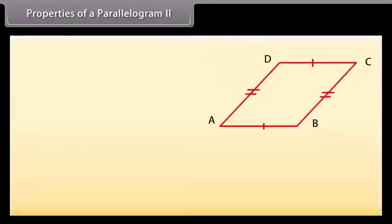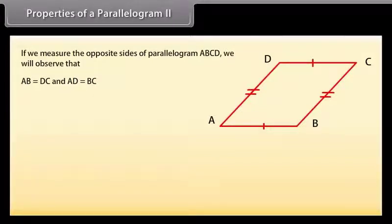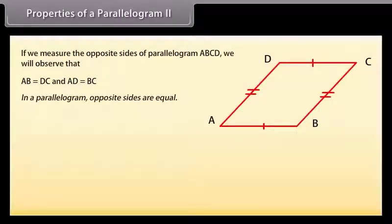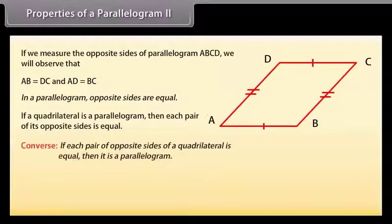Properties of a parallelogram: We know that a diagonal divides the parallelogram into two congruent triangles. If we measure the opposite sides of parallelogram ABCD, we observe that AB = DC and AD = BC, which is another property. In a parallelogram, opposite sides are equal. This can also be stated as: if each pair of opposite sides of a quadrilateral is equal, then it is a parallelogram.